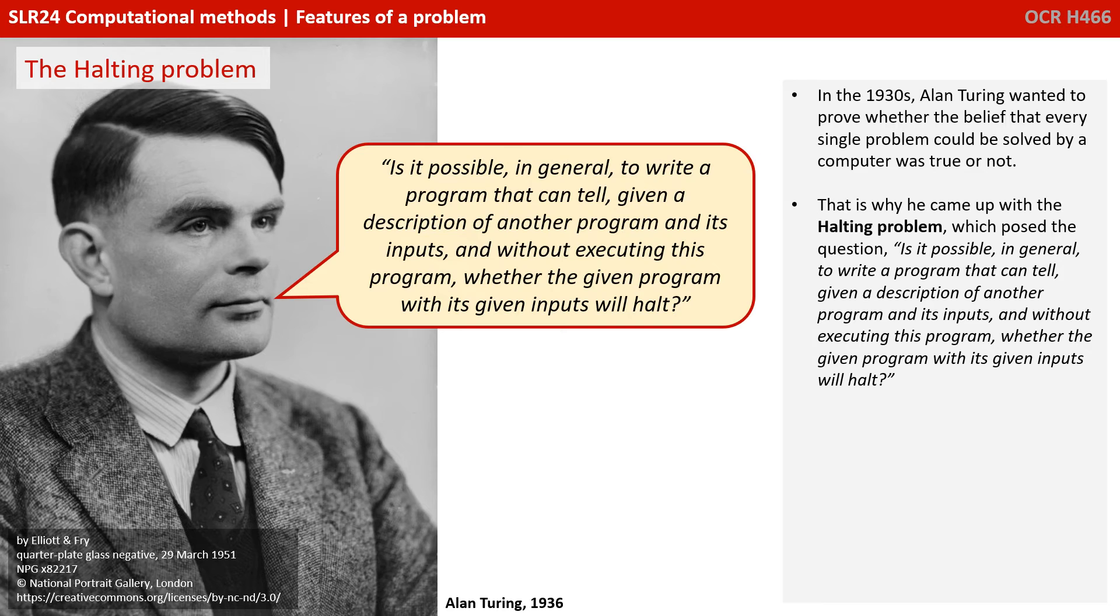In the 1930s, Alan Turing wanted to prove whether the belief that every single problem could be solved by a computer was true or not. That is why he came up with the halting problem, which posed the question: is it possible, in general, to write a program that can tell, given a description of another program and its inputs, and without executing this program, whether the given program with its given inputs will halt?